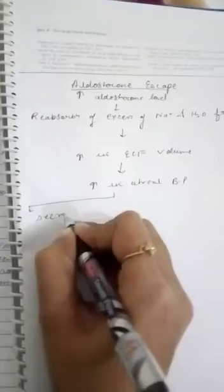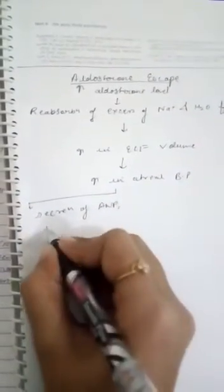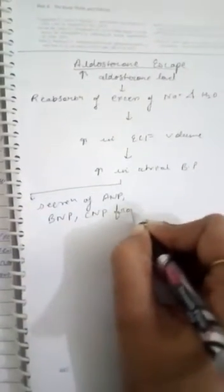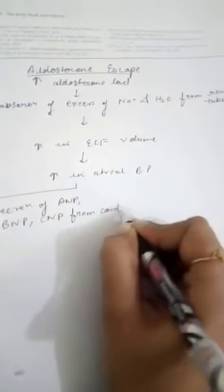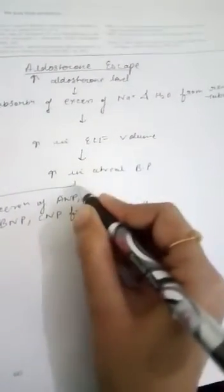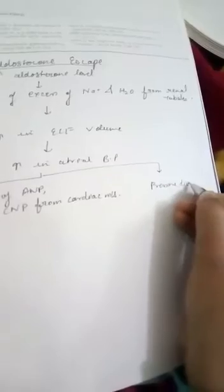The next step is secretion of ANP, BNP, and CNP hormones from cardiac muscles, and the other phenomenon is pressure diuresis.